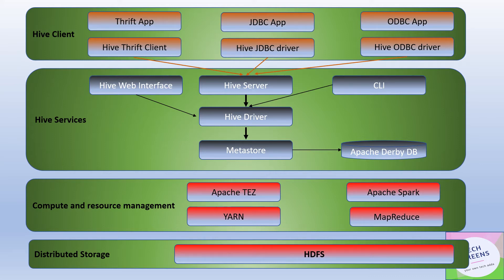The second component is the different Hive services, which are meant for the execution of queries and creation of the execution plan. Here you have a Hive web interface which could be used to submit queries. Internally, there is a Hive driver which talks with the Metastore. Metastore is the RDBMS database which is meant to keep the metadata of the Hive tables. So whenever you project any schema on top of your Hive files and create a table out of it, that table metadata goes into the Metastore. By default, it is implemented by Apache Derby database. The services component also provides a command line interface to submit different commands to the Hive system.